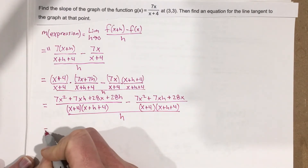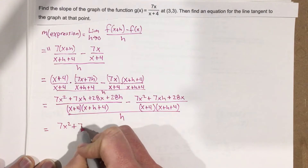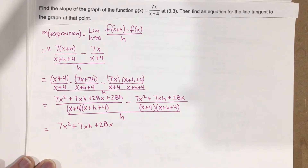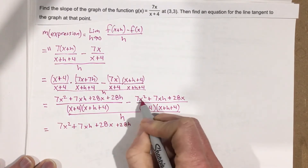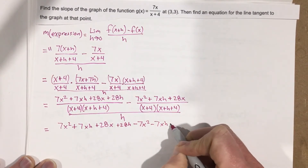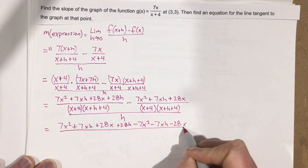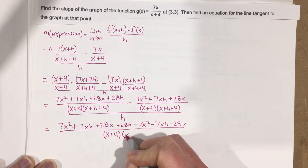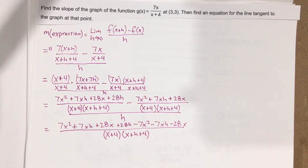When we distribute on top we get 7x squared plus 7xh plus 28x plus 28h. Then we take the negative and get negative 7x squared minus 7xh minus 28x. This is all over one denominator, x plus 4 times x plus h plus 4. We combine the two fractions together and distribute that negative, and this is all over h.